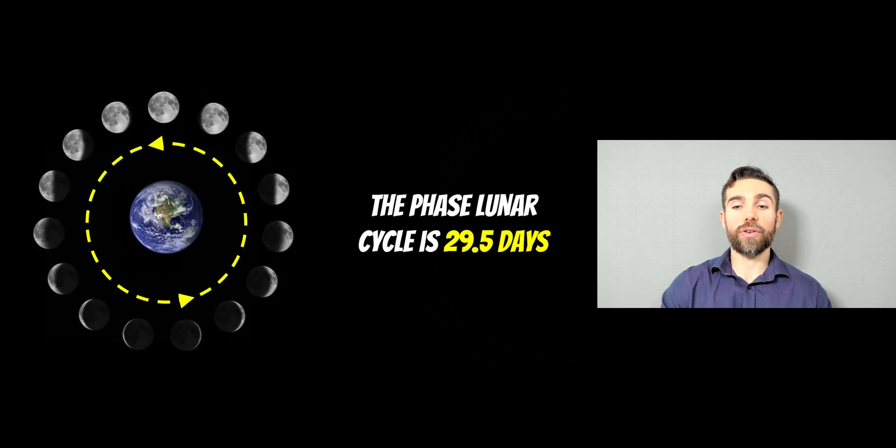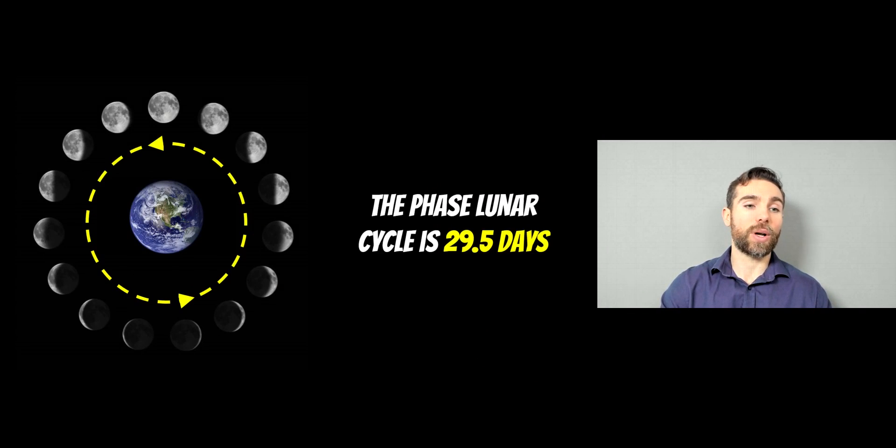Now, the lunar phase is 29.5 days. So that relates to its orbit around the Earth and it being fully illuminated all the way back around to being fully illuminated again. And that is just under 30 days.